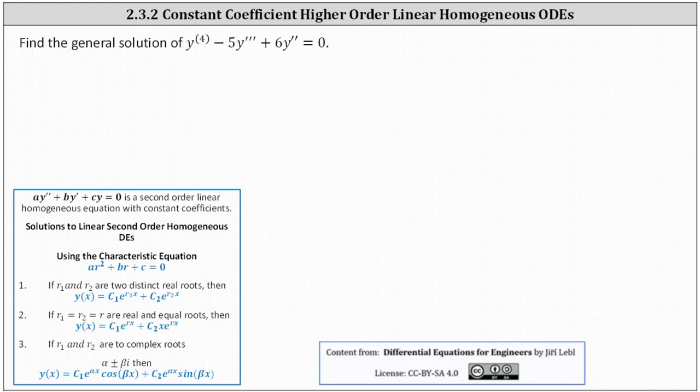To begin, analyzing the differential equation, notice how the corresponding characteristic equation is r to the fourth minus five r cubed plus six r squared equals zero.